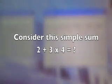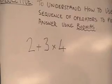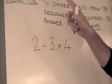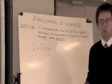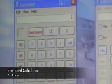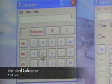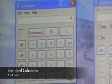I want us to consider this simple sum. We're going to try this simple calculation on both calculators and see what answers we get. So let's put them in. We have 2 plus 3 times 4, and that's given us the answer of 20.